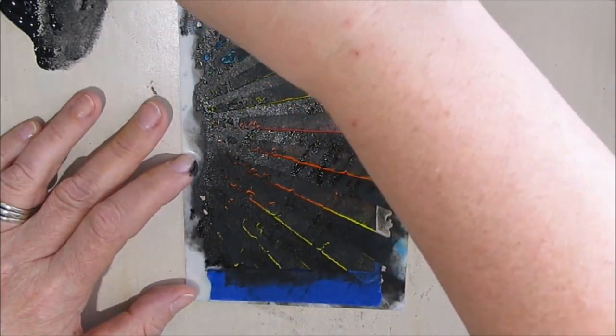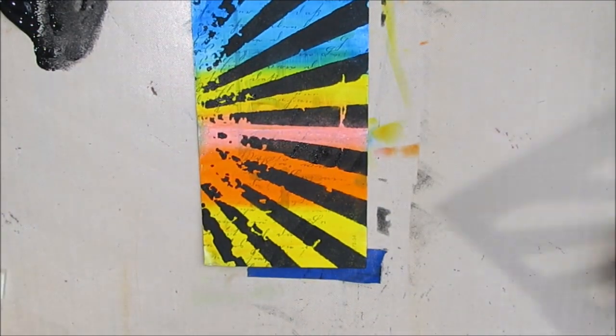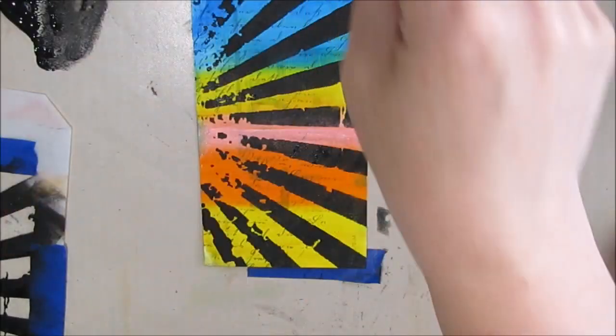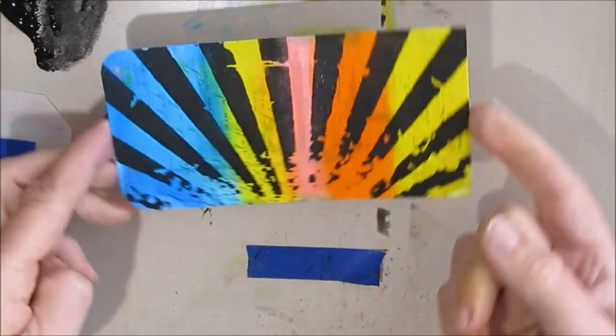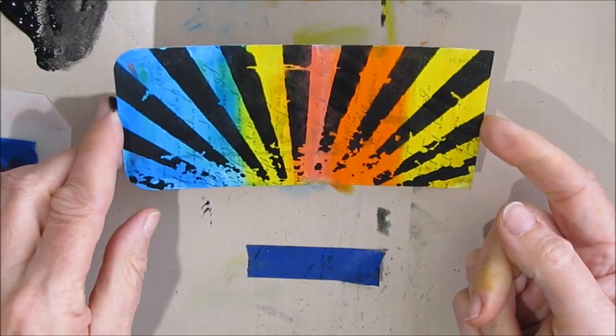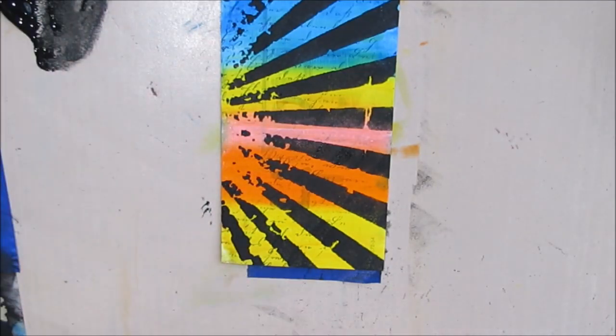So if you don't have cut and dry foam, makeup sponge will work just as well. Okay so that is that. Now I could turn it this way if I choose to. It's all personalized. I'm going to give that a quick dry.